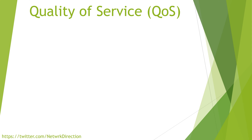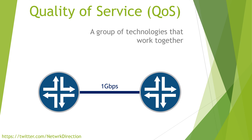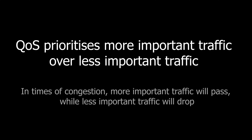So let's start with the basics. QoS, or quality of service, is not one single technology. Instead, it's a group of technologies and techniques that work together. It becomes important when you have limited bandwidth and one of your links is full. Imagine that you have a one gigabit link and you try to send 1.1 gigabit of data down it — that's more data than the link is capable of transporting. So while most traffic will make it, some will have to be dropped. Quality of service can be used to decide which traffic will be allowed to pass and which traffic is selected to be dropped. A simple definition is that QoS prioritizes more important traffic over less important traffic. In times of congestion, more important traffic will be allowed to pass while less important traffic will drop.